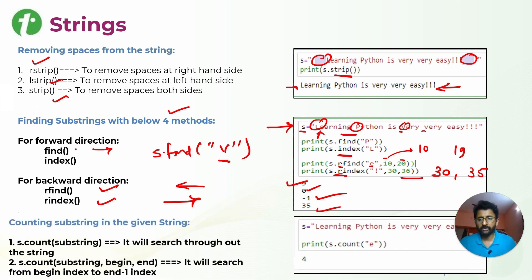If you wanted to count the substring, you can use count method. If you wanted to count E in all of the strings, it will tell it is repeated 4 times. You can also do with beginning and ending of ranges, like count E with 10 to 20.